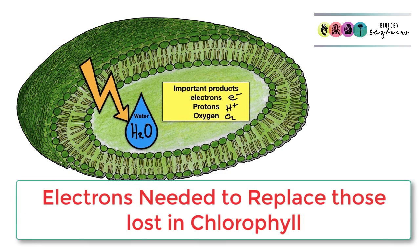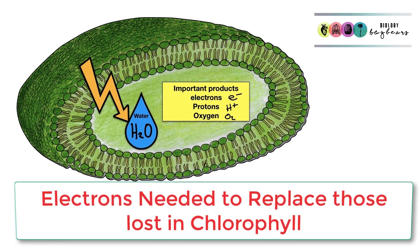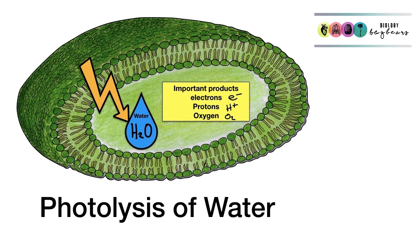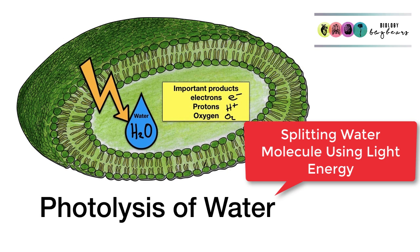Energized electrons have so far left chlorophyll in photosystem 2 and gone to photosystem 1. Electrons are now needed to replace those lost by the chlorophyll in photosystem 2. This is when photolysis of water takes place. This is using light energy to split water molecules, and it's really done to replace those electrons.